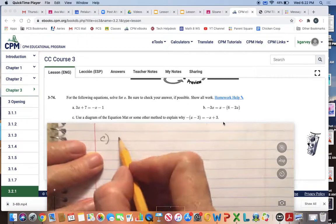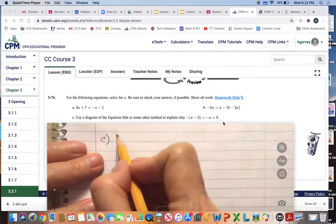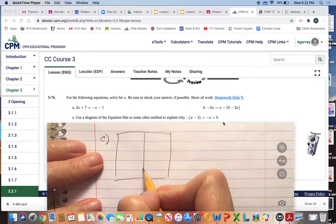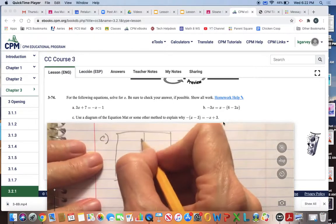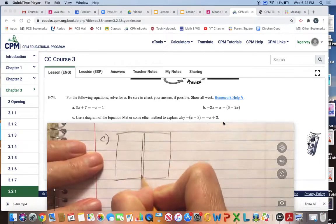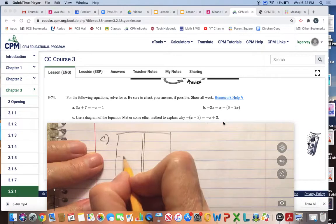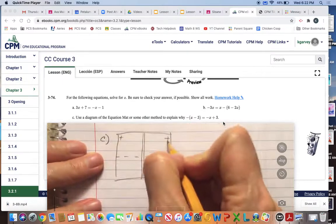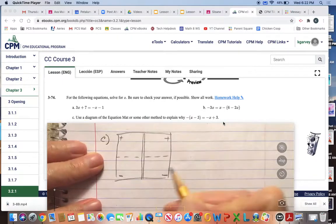If we draw an equation mat, we'll put the equal sign down here, and then we've got the dotted line down the middle, and we've got the plus region up here, negative region down here.